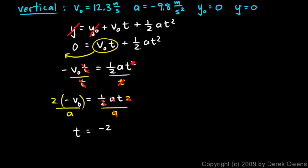So a little more room here. t is equal to negative 2 v0 over a. And I know these numbers, I know my v0 and my a. So let's write negative 2 times 12.3 meters per second, divided by a, which is negative 9.8 meters per second squared.